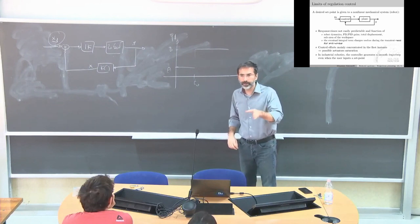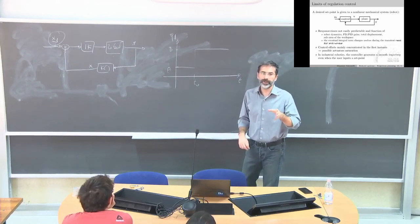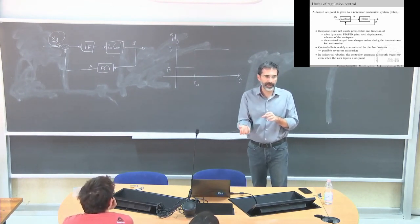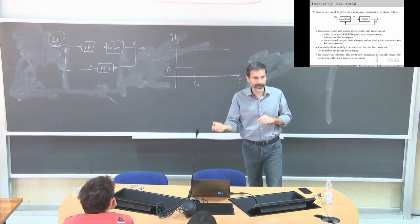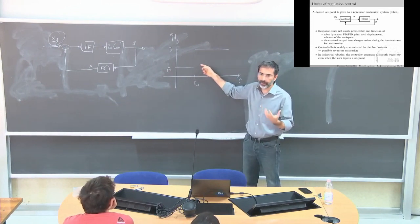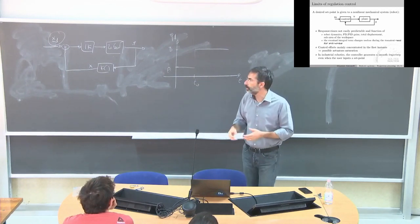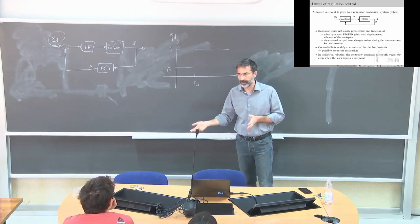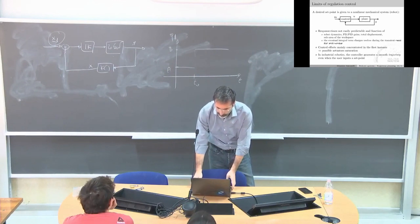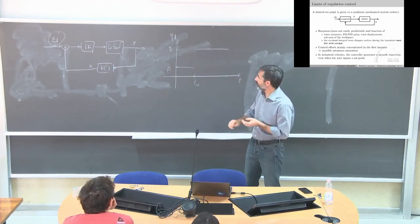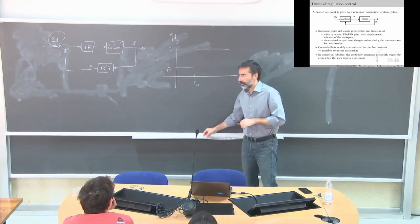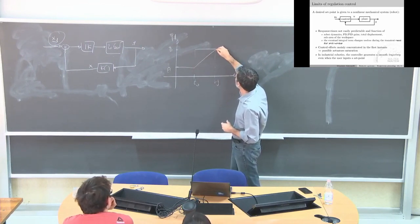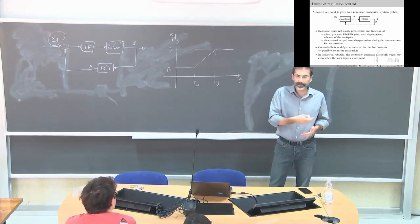In industrial robots, if you give discontinuous references to the low-level controller, the manufacturer just filters your desired position and always makes an interpolation to avoid it. This discontinuity means a discontinuity in the force and in the actuation — it reduces the life of the gears and the mechanical structure. So you usually don't give a set point directly to a mechanical system; you try to smooth the reference. A ramp reference is a little better than a step, but we can do even better.